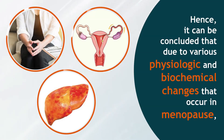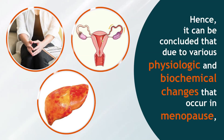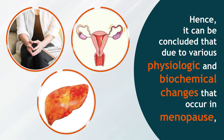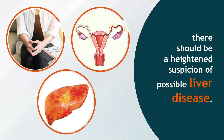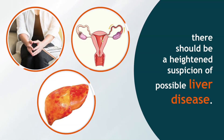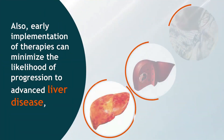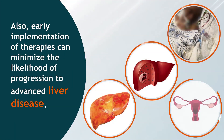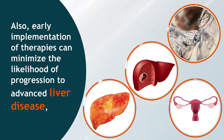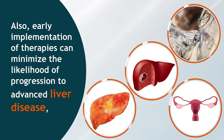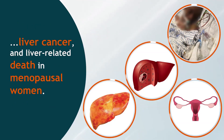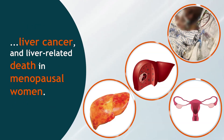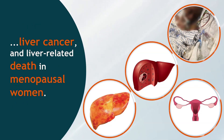In conclusion, due to the various physiologic and biochemical changes that occur in menopause, there should be a heightened suspicion of possible liver disease. Early implementation of therapies can minimize the likelihood of progression to advanced liver disease, liver cancer, and liver-related death in menopausal women.